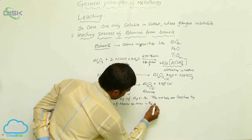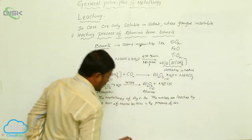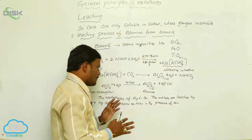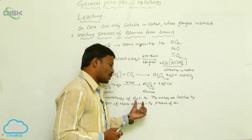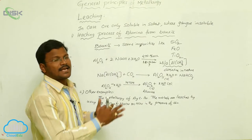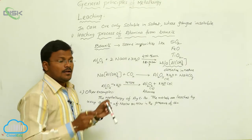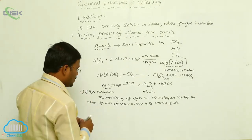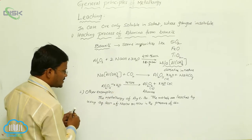This leaching is carried out in the presence of air. When silver and gold metals interact with an aqueous solution of either sodium cyanide or potassium cyanide in the presence of air, they form a complex cyanide system. The formed cyanide complex is then reacted with zinc to isolate pure silver or gold metal. Let us write the chemical reactions included in this process.